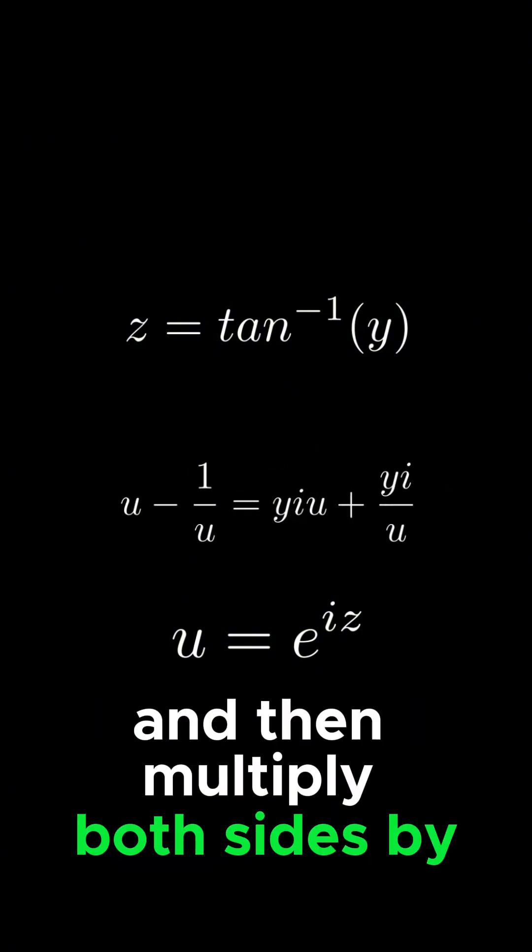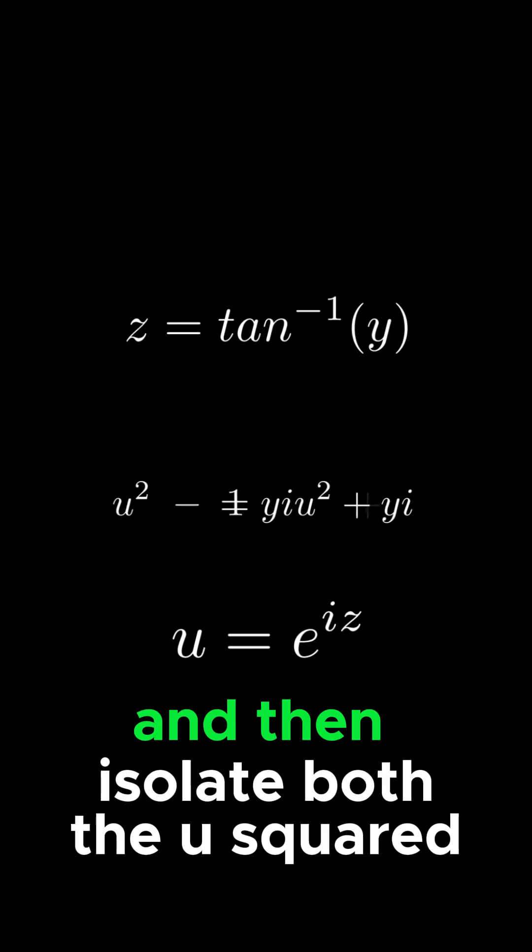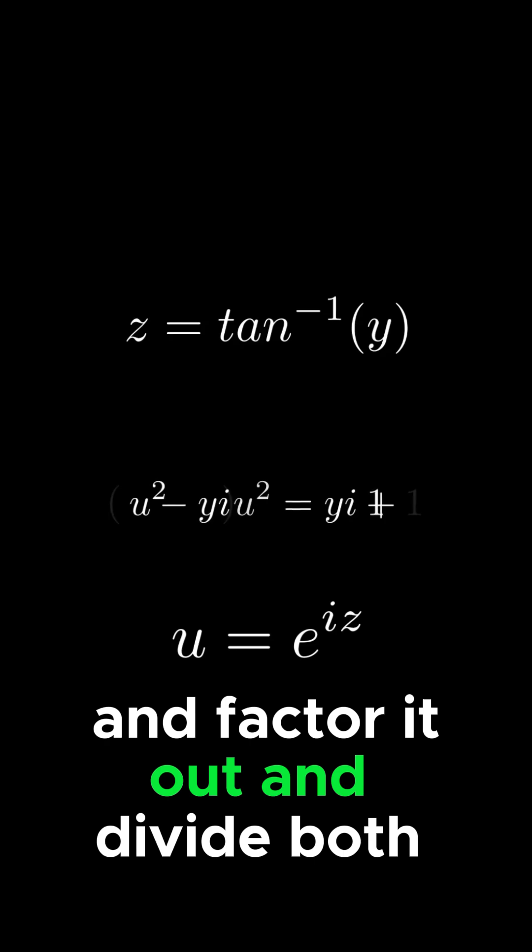And then multiply both sides by u, make it all easy, and then isolate both the u squared by itself, then factor it out.